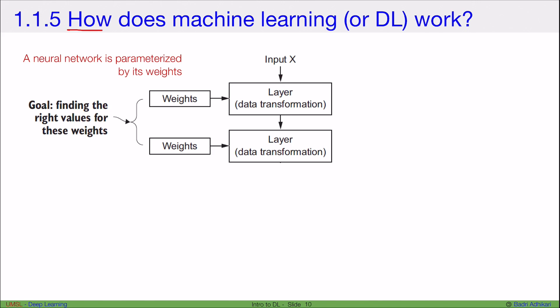Now let's briefly talk about how machine learning or deep learning works. A neural network is basically a parameterized function, parameterized by its weights.